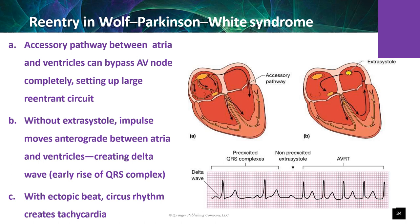In Wolff-Parkinson-White syndrome, an accessory pathway electrically connects the atria and ventricles. The accessory pathway allows a normal beat to reach parts of the ventricle quickly, bypassing the slowly conducting AV node. On the EKG, this is reflected as a delta wave that quickly transitions to the QRS complex, shortening the PR interval and prolonging the QRS complex. The presence of a bypass track also promotes re-entry when an atrial ectopic beat occurs, forming a larger re-entrant circuit with the AV node as the slow pathway and the abnormal AV conduction as the fast pathway.